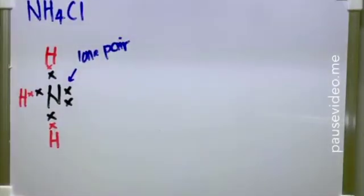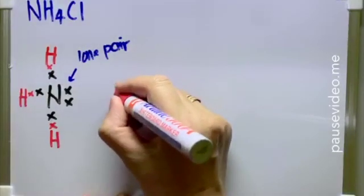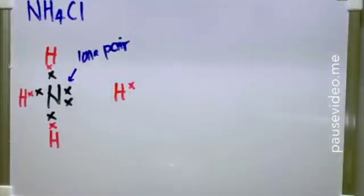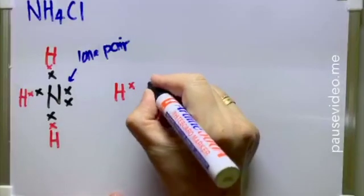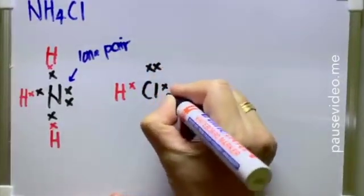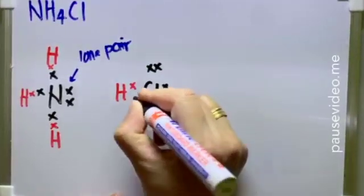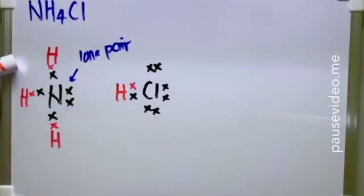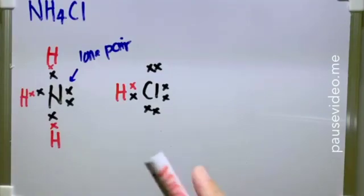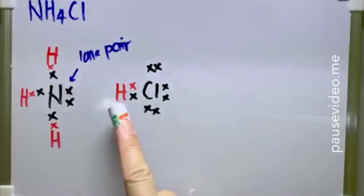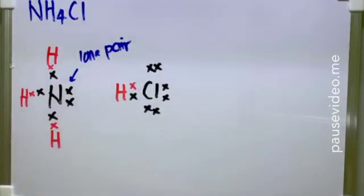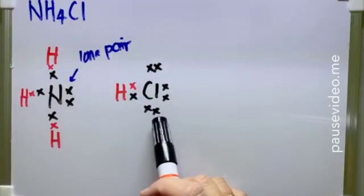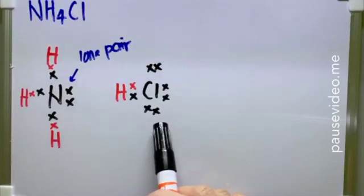Now as we move on to hydrogen chloride — okay, what we can see here is H and Cl. This is the Lewis structure of ammonia gas and this one is the Lewis structure of hydrogen chloride. As you can see here, the hydrogen atom shares one electron with the chlorine atom. Therefore, hydrogen achieves duplet and chlorine achieves octet.